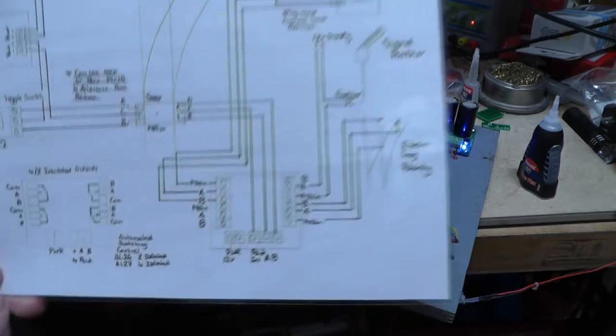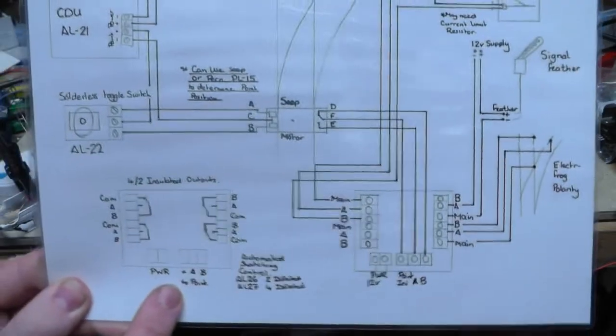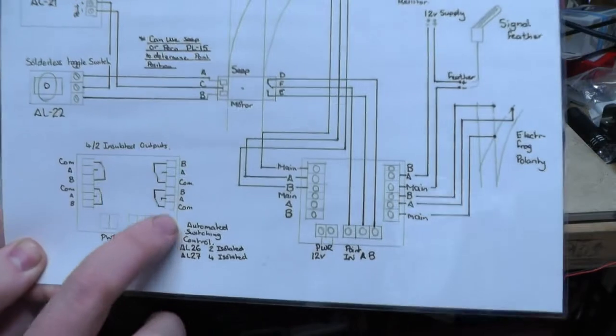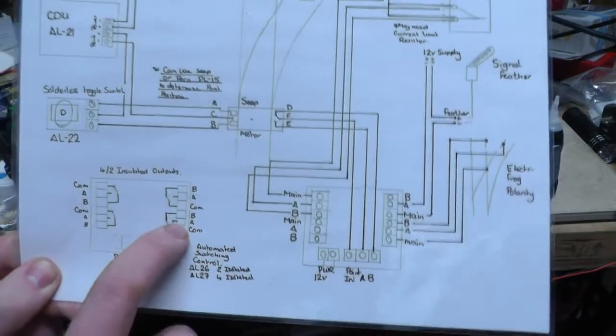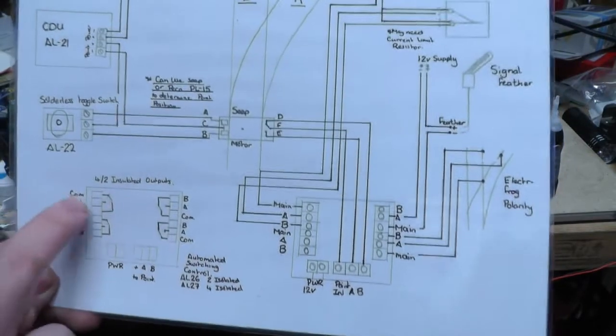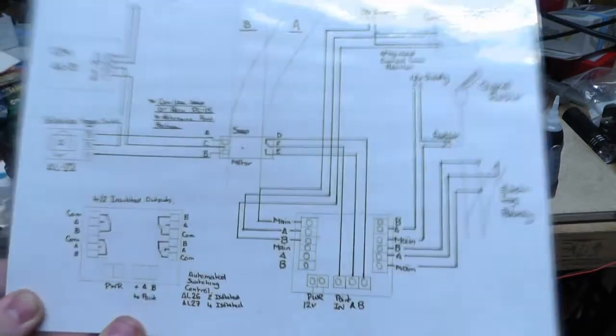So I hope I've explained that. There's just another picture here which just shows it. So you've got a common and you've got A—it can either be switched to A or B—and there are four isolated circuits.